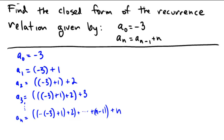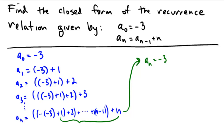Well we can, using all of our simplification tools and formulas known from other classes or previous material. So it looks like a sub n has that negative 3 at the beginning, but then we have this 1 plus 2 plus 3 plus dot dot dot all the way through n. And of course, as we've seen several times in different proofs and examples, the sum of the first n integers is n times n plus 1 over 2.